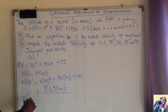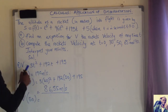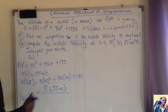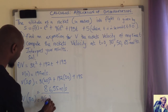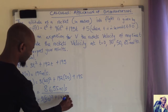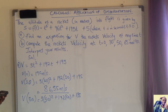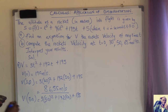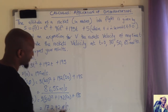Now we find velocity at 50 seconds. You substitute t = 50 wherever there is t, so it becomes 3 times 50 squared plus 192 times 50 plus 195. This gives us 17292 meters per second. Then for v at 65 seconds, we substitute t = 65: 3 times 65 squared plus 192 times 65 plus 195, which gives 25350 meters per second. Don't forget the units.